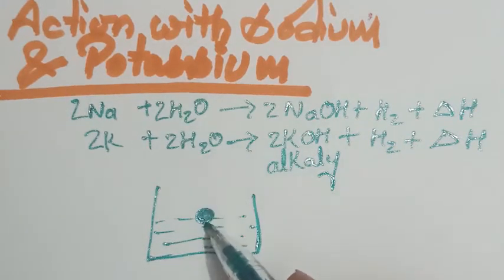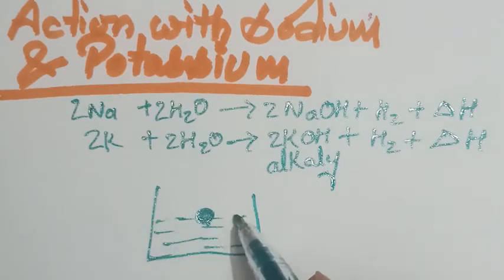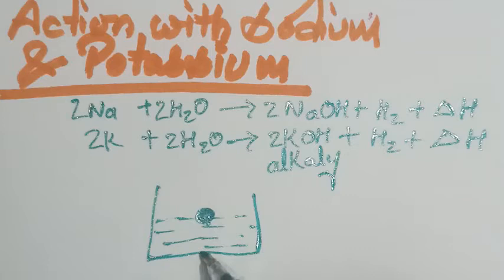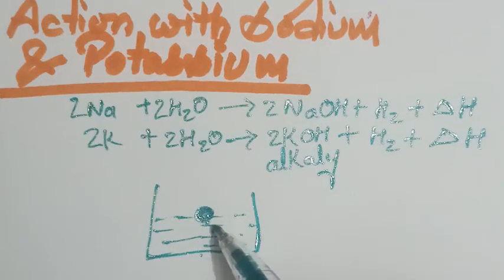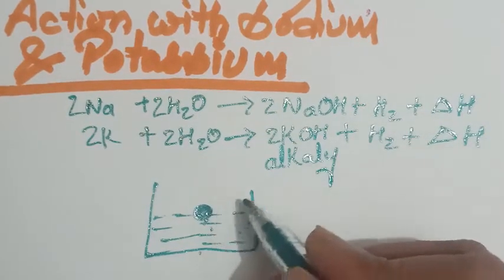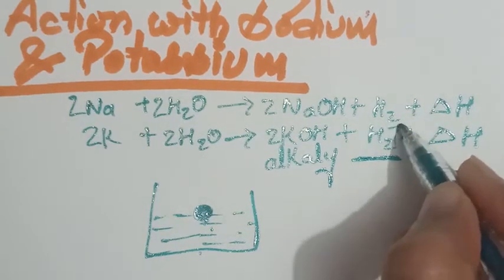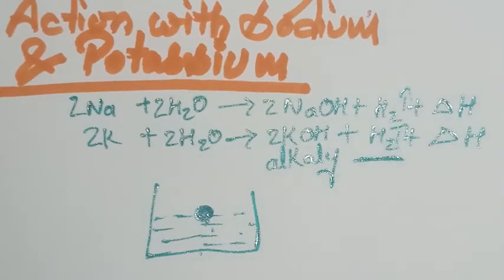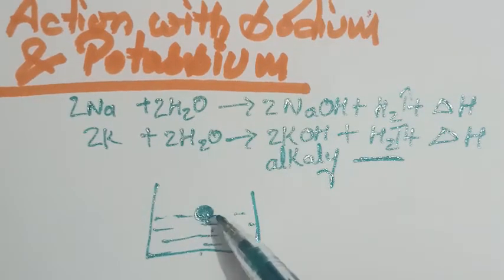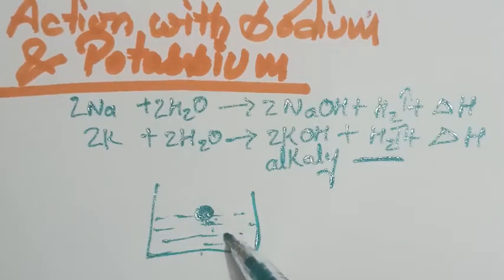It melts to form a silvery ball, bubbles appear with vigorous movement, and gives off tiny bubbles of hydrogen gas. Then it reduces in size.